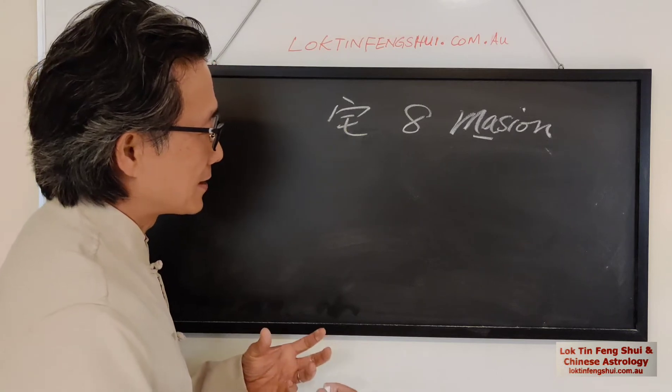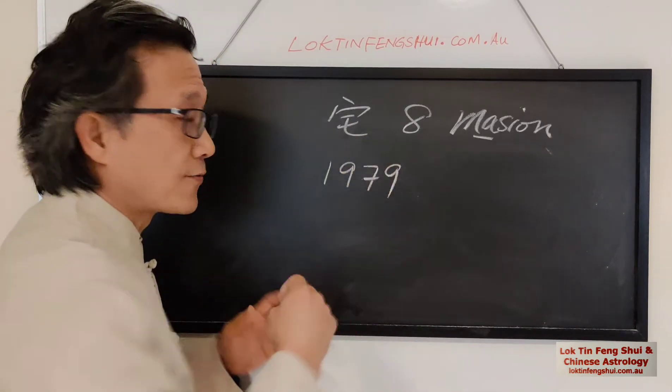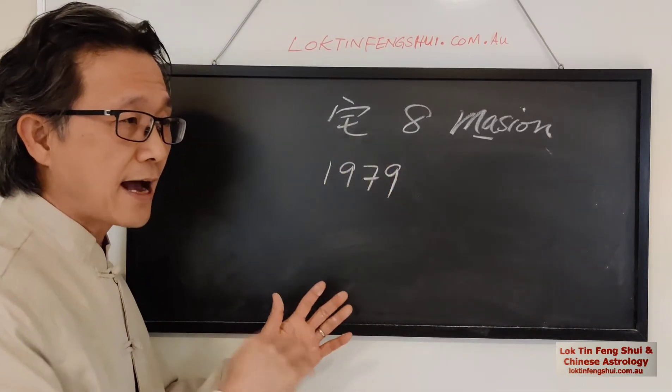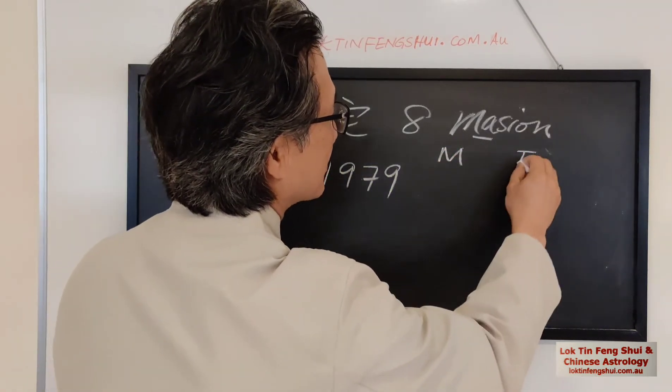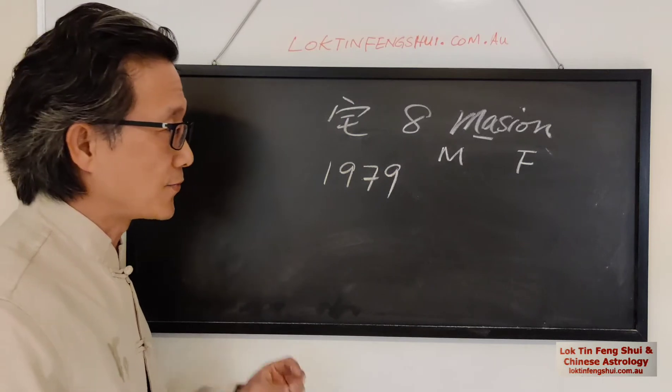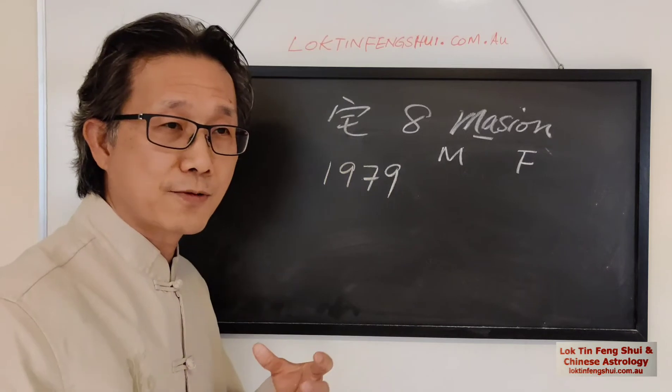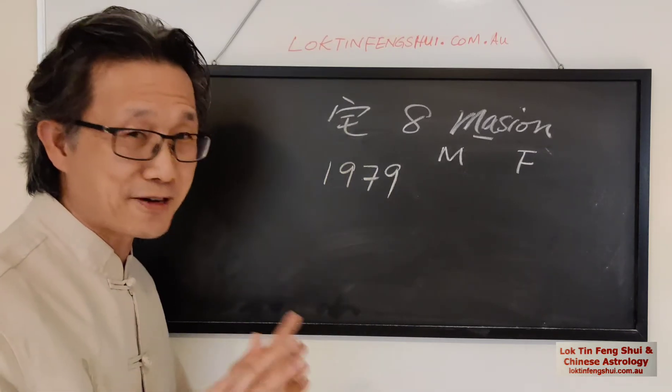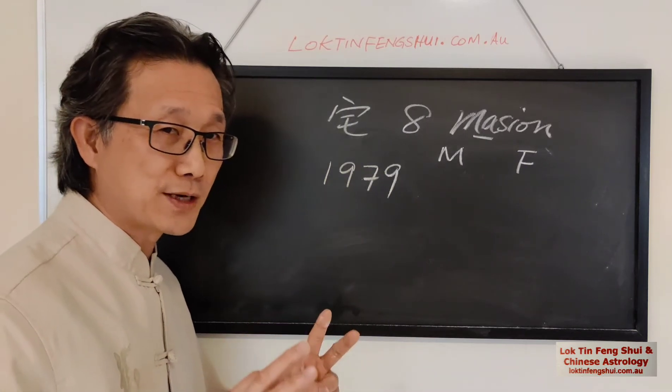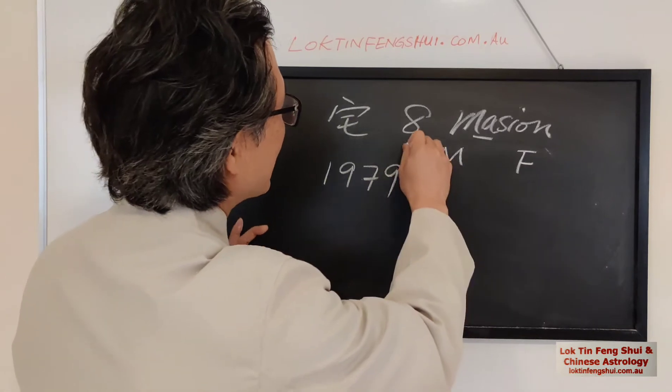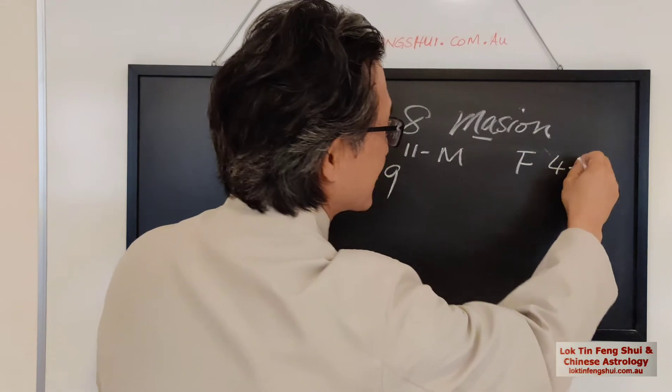The birth year, say, let's say someone 1979. The female and the male, they have a different formula. So let's say, male and female, so they are different formula. So remember, there's many different ways of calculating the Mingua. I found this one is quite an interesting one and very easy. So you just remember two numbers. For male, it's 11 minus. For female, it's 4 plus.